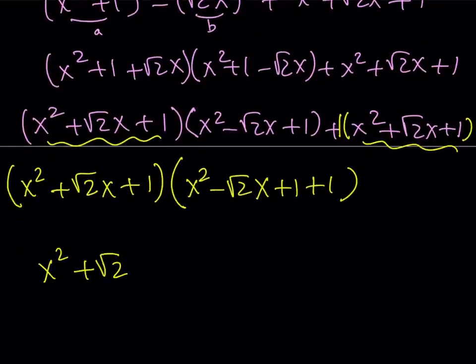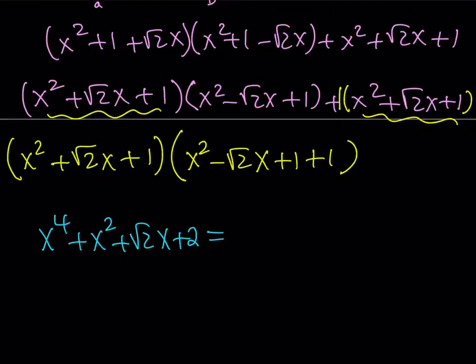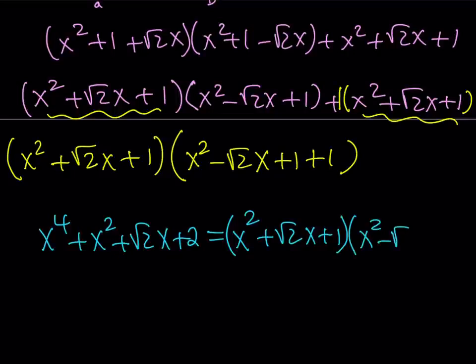And when I write it in the final form, it is going to be... and remember our original expression, let's go ahead and write it down, and then we're going to write it all the way as a factored form. And it's going to look like this. My original expression was x^4 + x^2 + √2x + 2, and now we know that it's factorable into (x^2 + √2x + 1)(x^2 - √2x + 2). And this brings us to the end of this video.